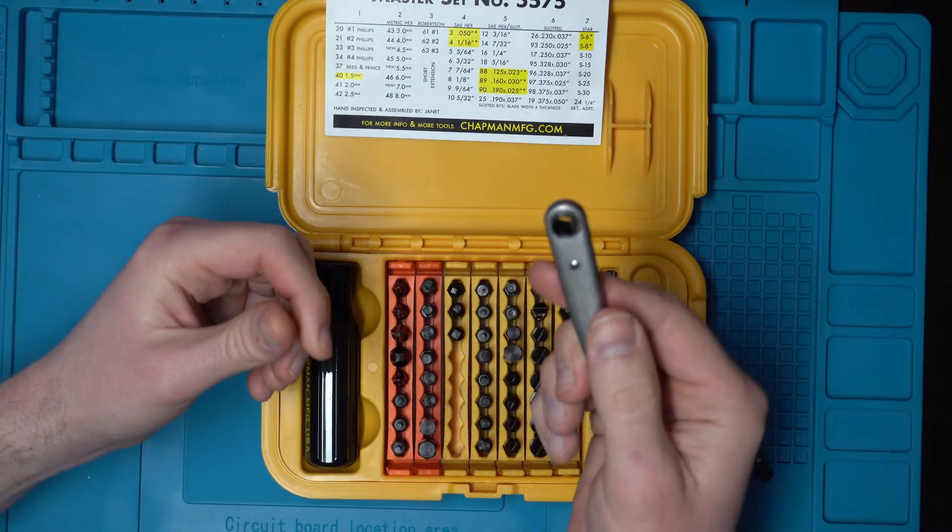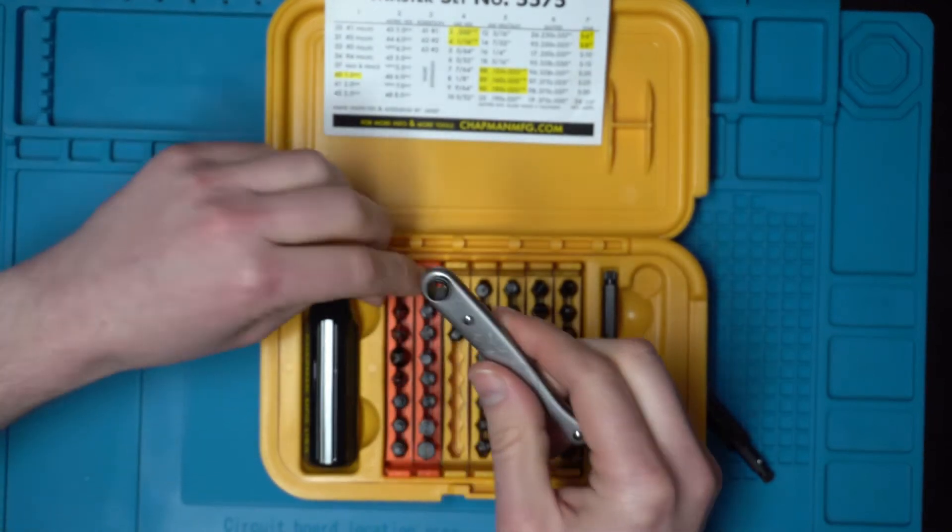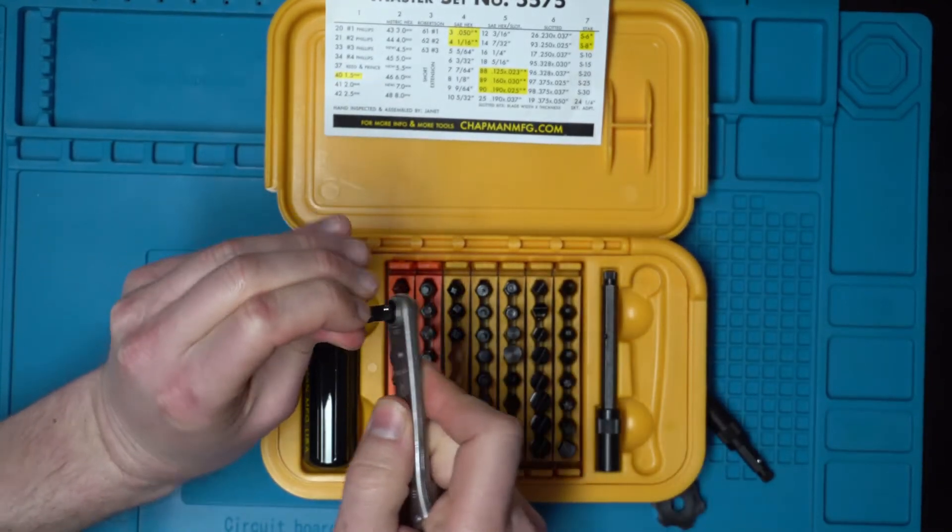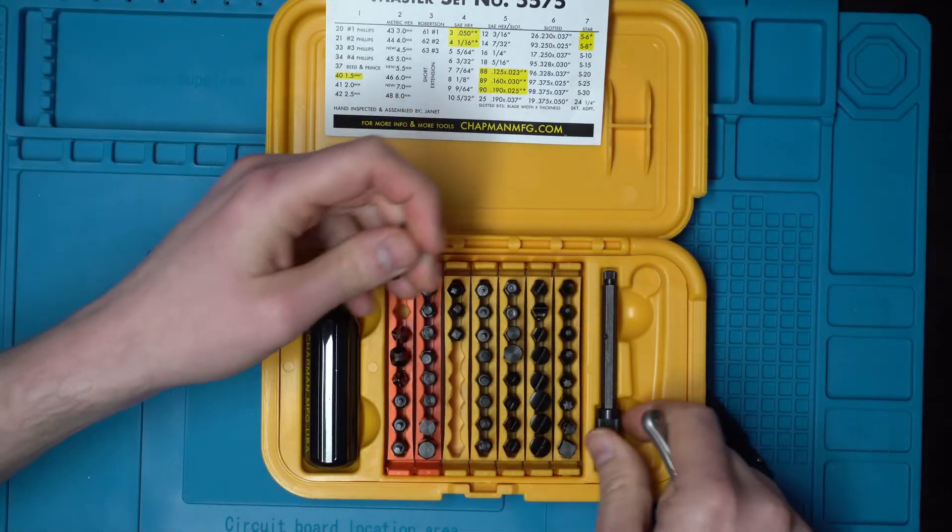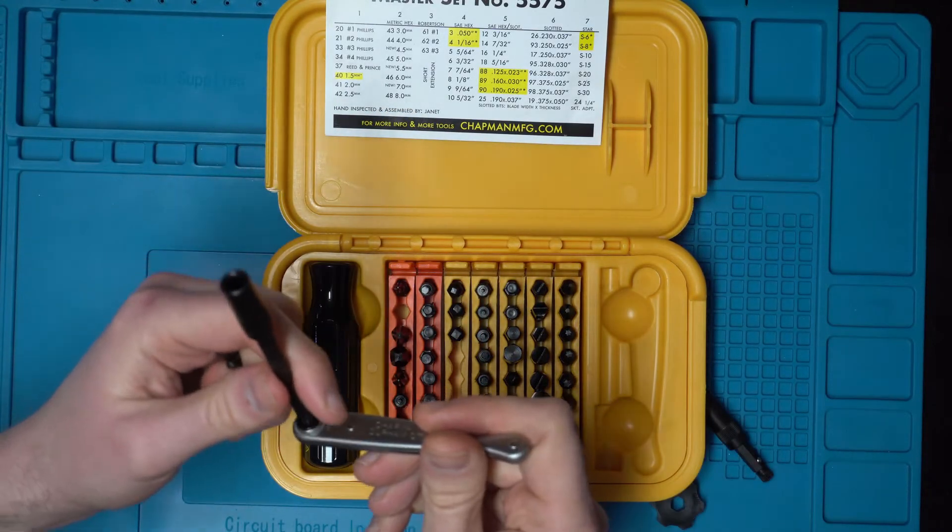As well as what makes this kit unique is this little ratcheting system. You put the bits in and it allows you to ratchet in and out, and it's great for getting in tight spaces.